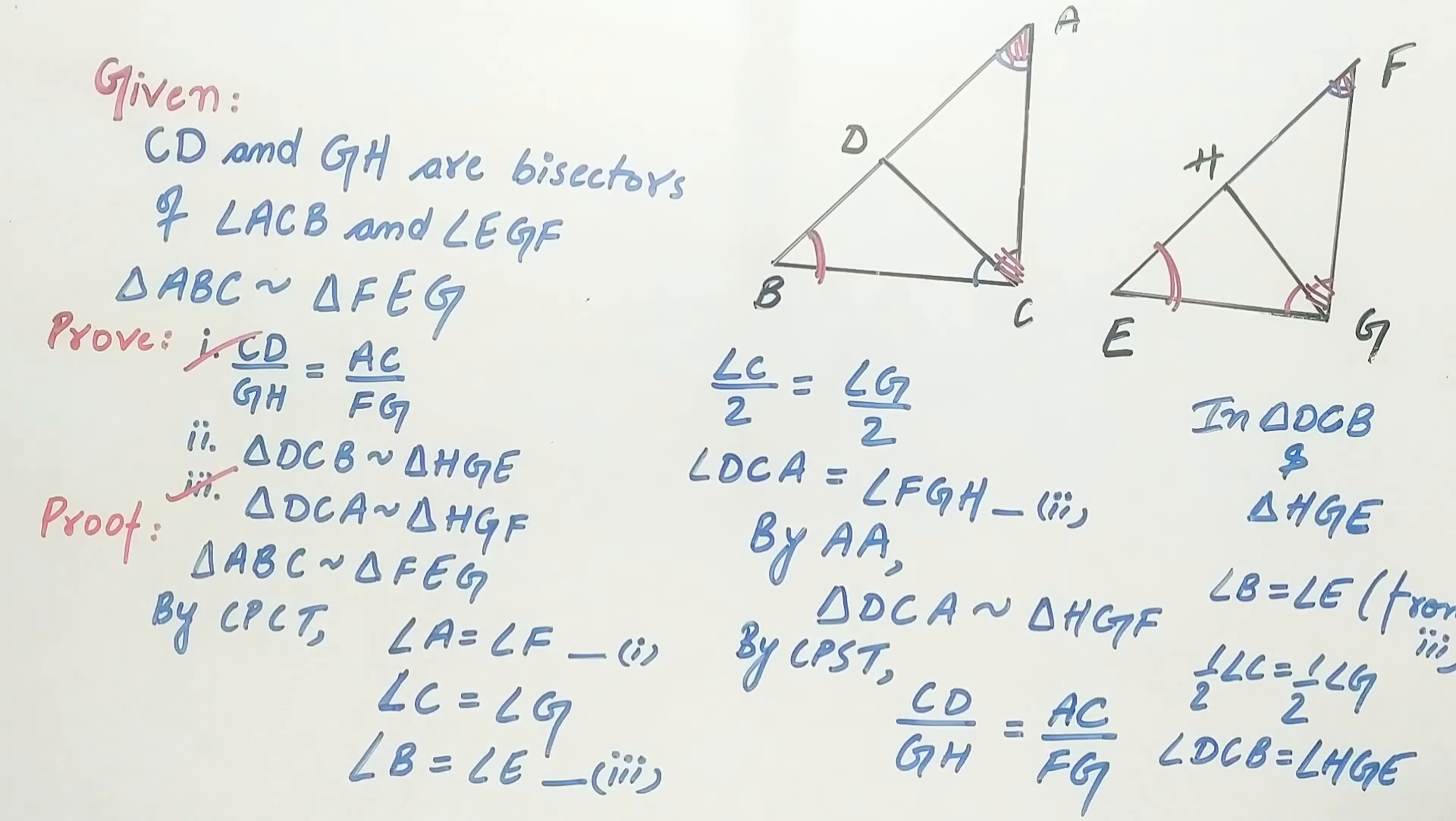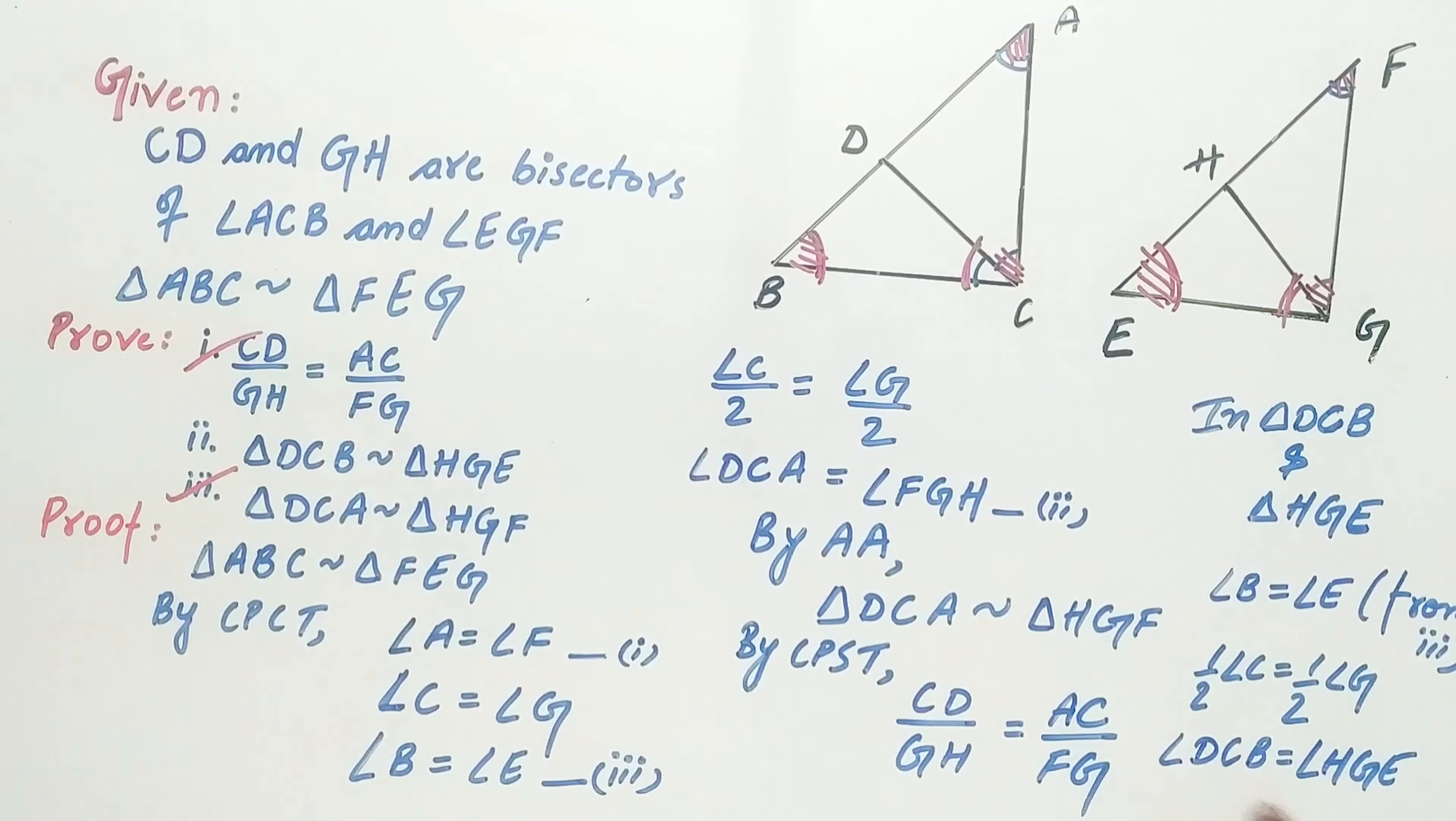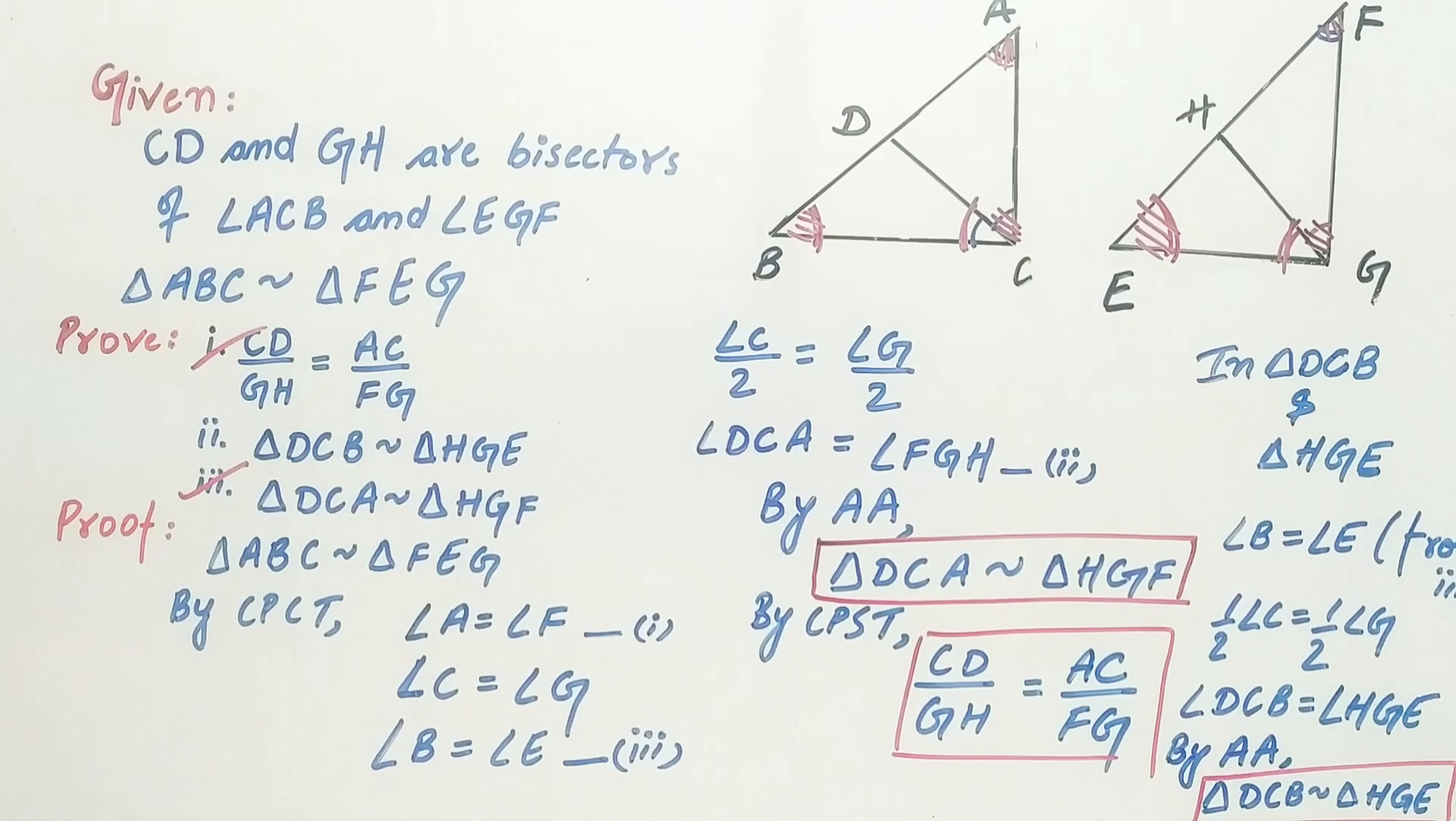Hence, our angle B is equal to angle E, and our angle DCB is equal to our angle HGE. Hence, both these triangles are similar. This brings us to an end of this question.